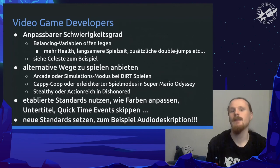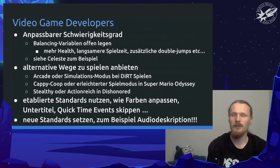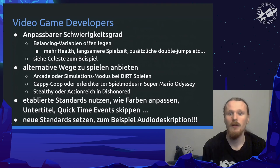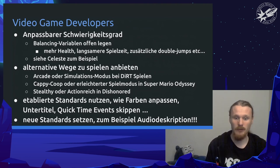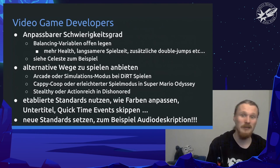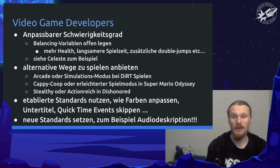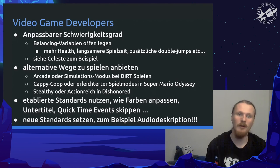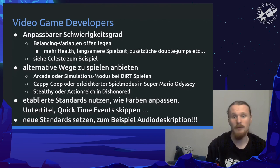Let's get back to video games. An adjustable difficulty is great — you can often have many balancing variables opened up to the user, such as more health, slow down the game, add more double jumps. Celeste has a great example for that, with lots of these variables shown. There are also alternative ways to play games — for example, some games like Dirt Rally can be played as an arcade game or as a simulation. In Super Mario Odyssey there are two very different game modes that are much more accessible. Maybe also use established standards like more distinguishable colors and audio descriptions.